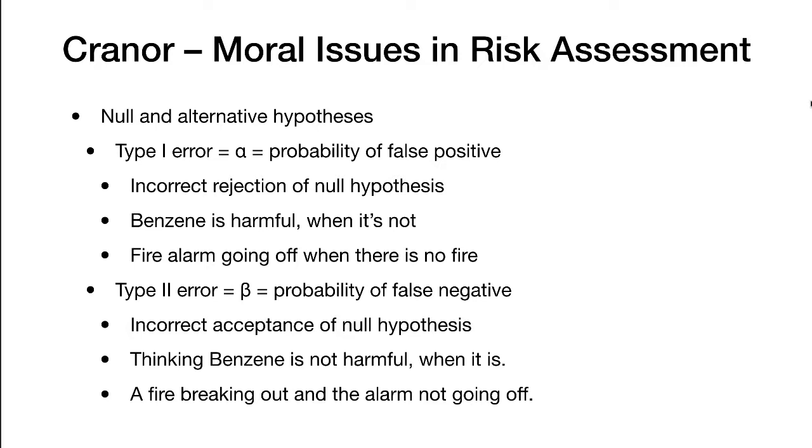For example, thinking benzene is harmful when it's not. Or this is like a fire alarm going off when there is no fire. A Type II error, beta, is the probability of a false negative. This is incorrect acceptance of the null hypothesis. Thinking benzene is not harmful when it is. And this would be a fire breaking out and the alarm not going off.